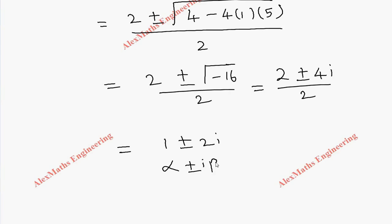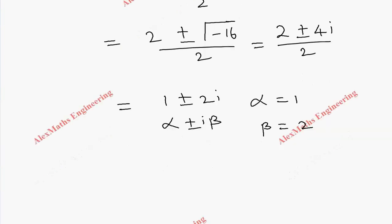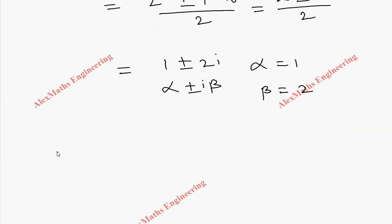This is of the form alpha plus or minus i·beta, so alpha is 1 and beta is 2. So we write the complementary function, which is e^(alpha·x) into a cos(beta·x) plus b sin(beta·x).